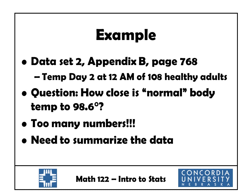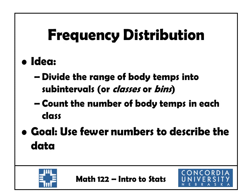A list of 108 numbers is too many to look at. So we're going to try to summarize the data so that we don't have so many numbers to look at. Our first step in doing this is to create what's called a frequency distribution. A frequency distribution is a table, and the basic idea is that we're going to divide the range of body temperatures into several subintervals, also called classes or bins, and then count the number of body temperatures in each one. The idea is to use fewer numbers to describe the data.